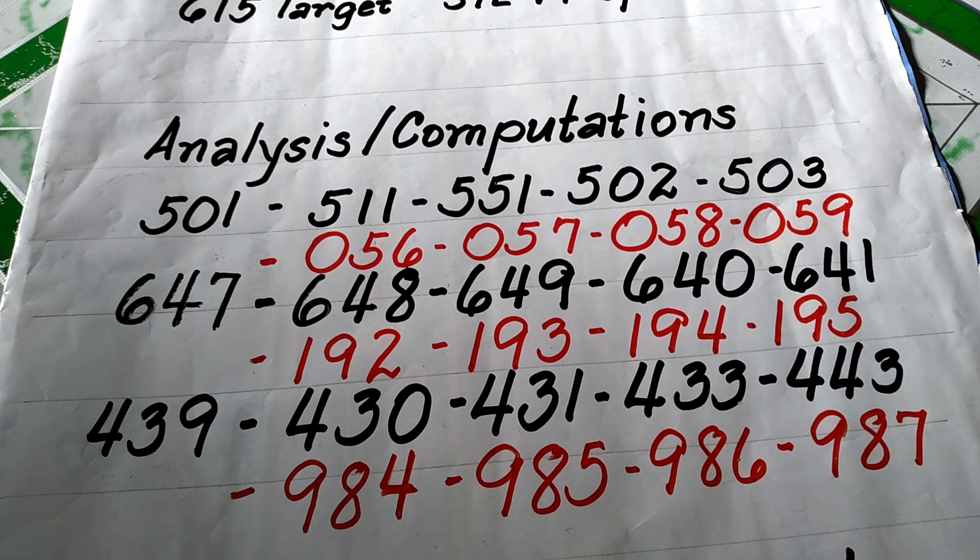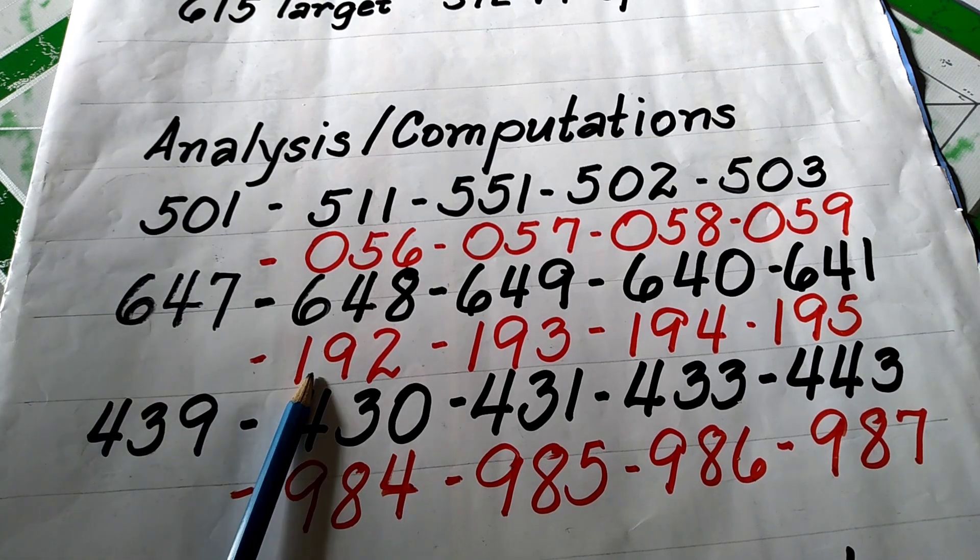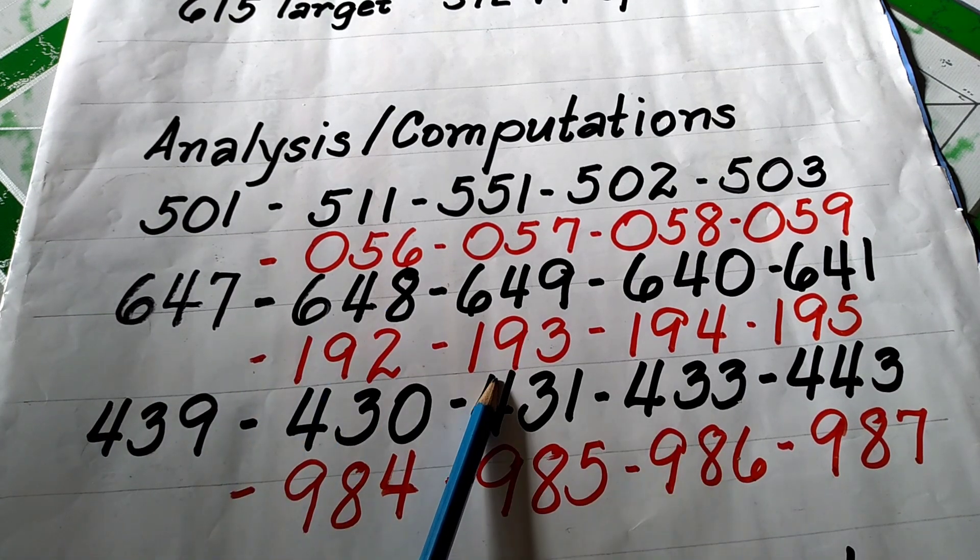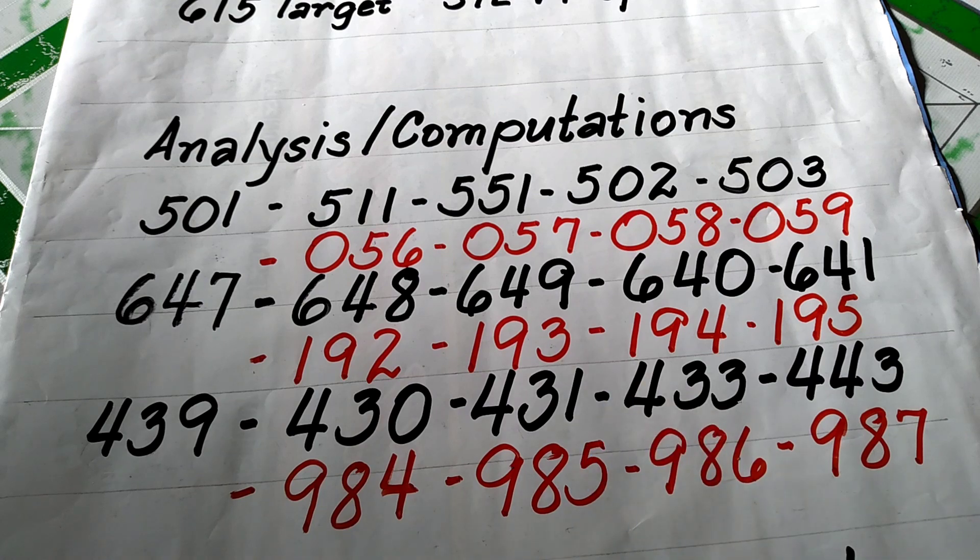Ang numerical equivalent ng 6-4-7 ay maaring 192, 193, 194 o di kaya 195.